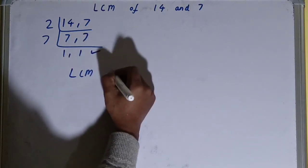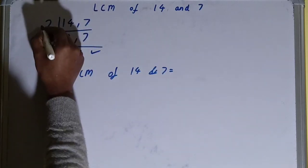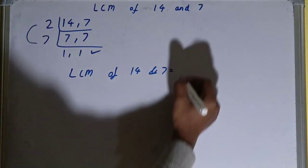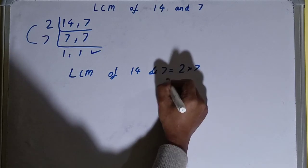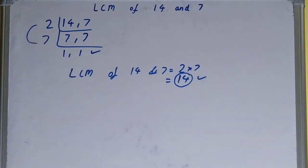And we need to do one last thing: LCM of 14 and 7 equals multiply whatever you have on the left-hand side. That is 2 cross 7, that will give you the answer as 14, or LCM as 14. So this is all about LCM of 14 and 7.